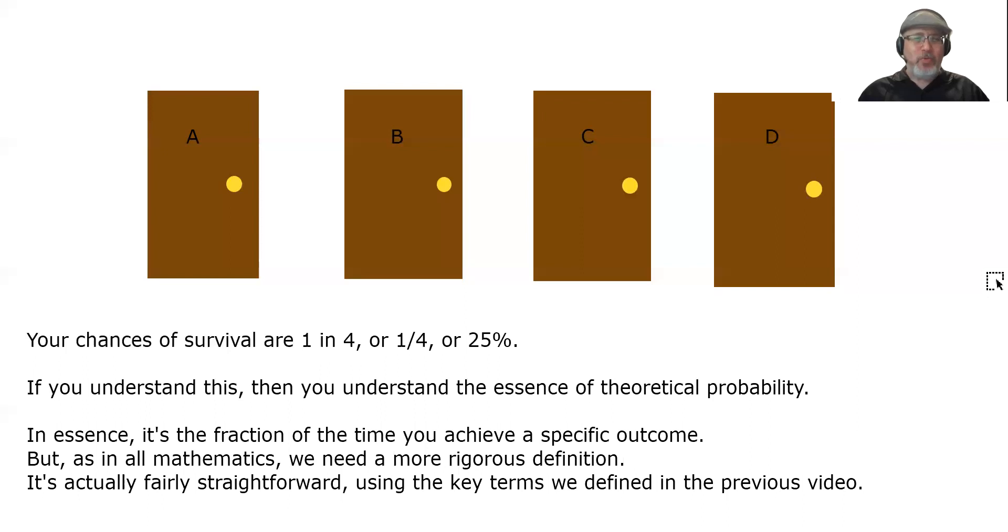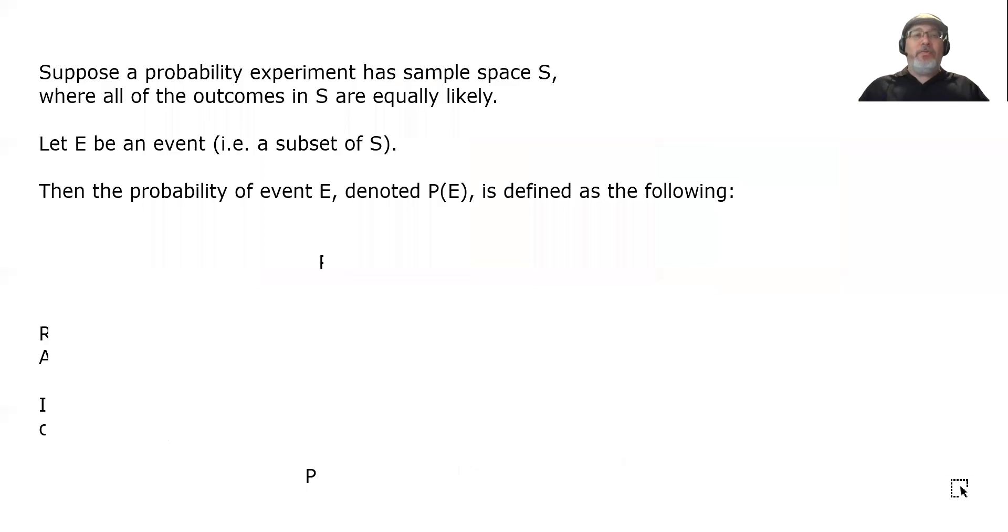But as in all mathematics, we need a more rigorous definition. It's actually fairly straightforward, using the key terms we defined in the previous video. Remember, those terms were probability experiment, outcome, event, and sample space. Suppose a probability experiment has sample space S, where all of the outcomes in S are equally likely. Let E be an event, in other words, a subset of S. Then the probability of event E, denoted P(E), is defined as the following.